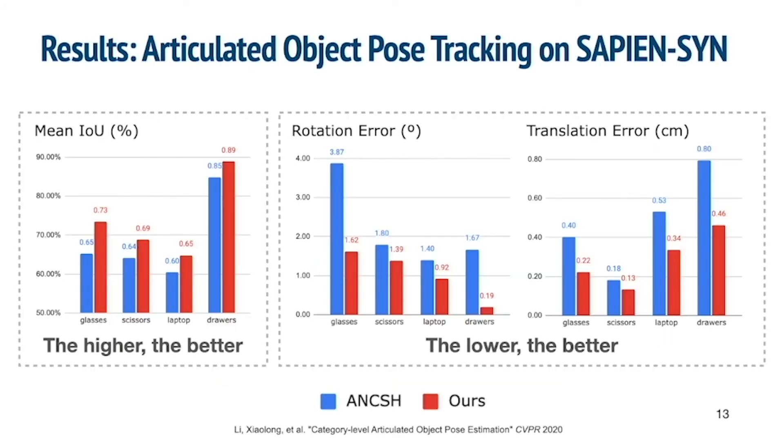On our synthetic Sapien articulated object dataset, we also beat the state-of-the-art method ANCSH on all categories and metrics.